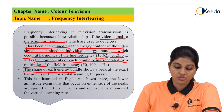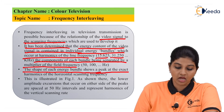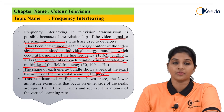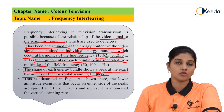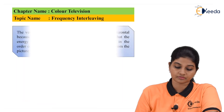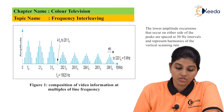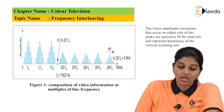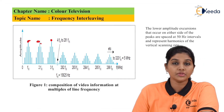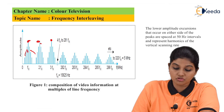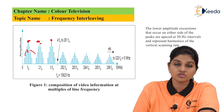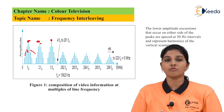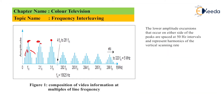The shape of each energy bundle shows a peak at the exact harmonic of the horizontal scanning frequency. As shown in the figure, the lower amplitude excursion occurs on either side of the peak, spaced at 50 Hz intervals, and represents harmonics of the vertical scanning rate.